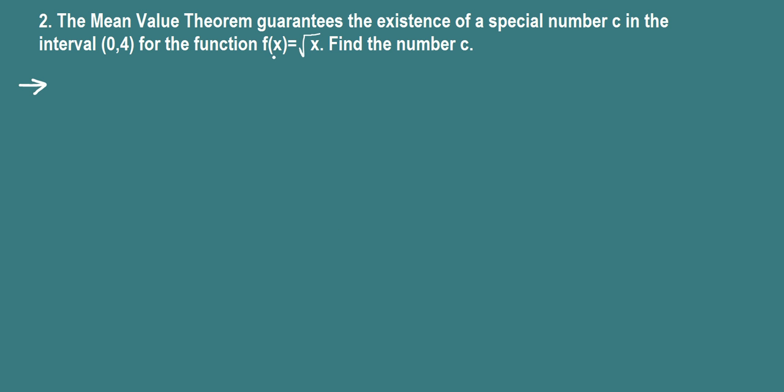In this question, the function square root of x is defined on the closed interval [0,4] and is differentiable on the open interval (0,4). That's why the Mean Value Theorem applies and we have a special number c.